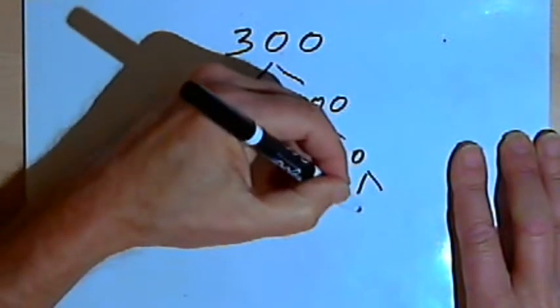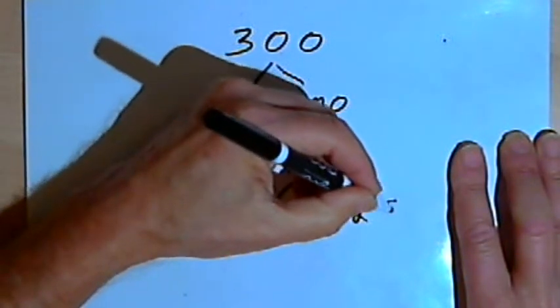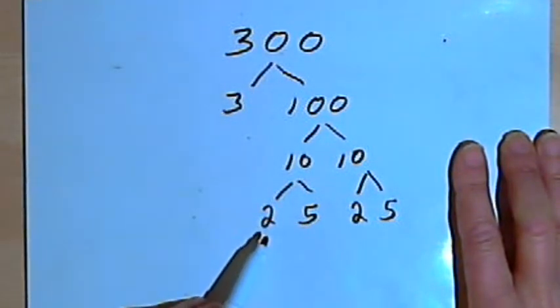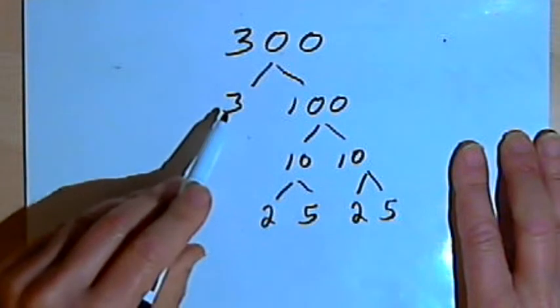I'll do the same thing for the other 10. I have 2 times 5. Now at the ends of my branches I've got nothing but prime numbers. So this is the prime factorization.